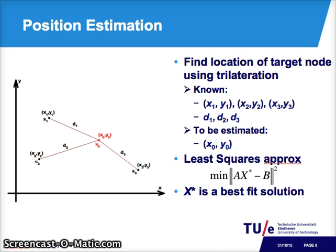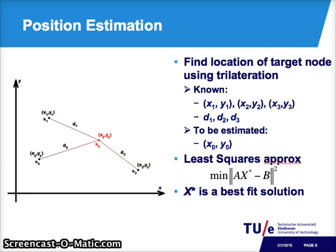For position estimation, given the location of anchor nodes (x1, y1), (x2, y2), (x3, y3), and the distances from the target to the anchors d1, d2, and d3, we need to estimate the location of the target (x0, y0). We use trilateration by constructing three circles centered at the three anchors with radii equal to d1, d2, and d3, then solve a system of three equations. However, in the presence of errors in the distance estimates, we don't get a unique solution. Therefore, we use a least squares estimation technique to minimize errors and get the best fit solution.